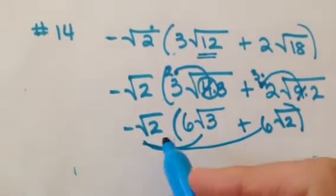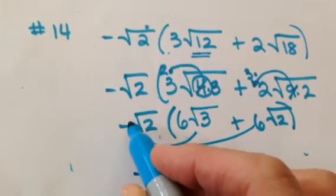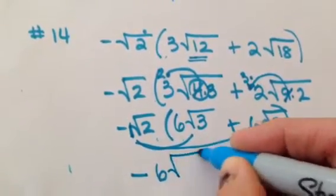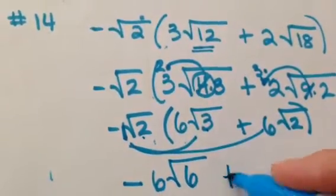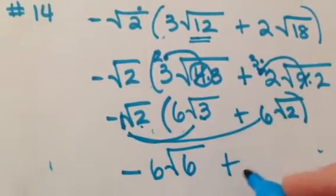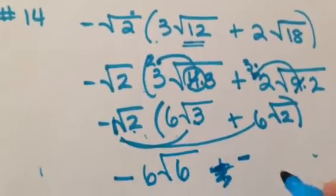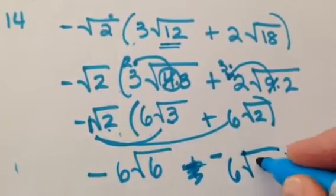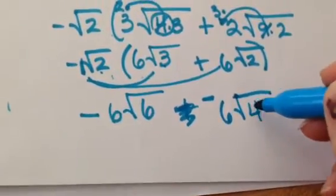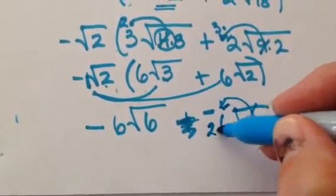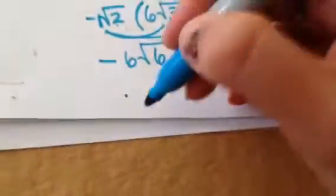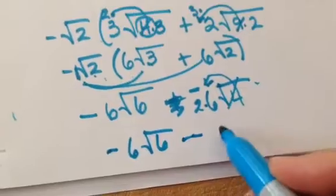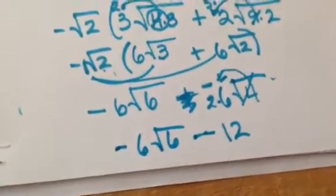Using the distributive property: you've got a negative times a positive, which is negative. If you don't see a number, it's a 1 there. So 1 times 6 is 6, and underneath the radical you get the square root of 6, because 2 times 3 is 6. Now multiply the outside term by the second term: negative times positive is negative. You get negative 6 square roots of — 2 times 2 is 4, and the square root of 4 is perfect, so it comes outside as a 2. That gives you 2 times 6, which is 12. So your final answer is negative 6 square roots of 6 minus 12.